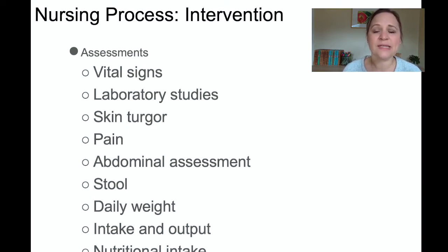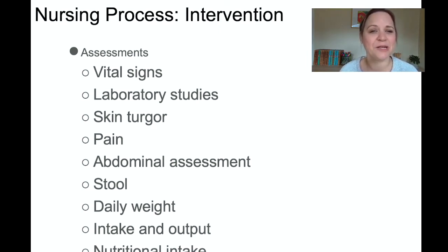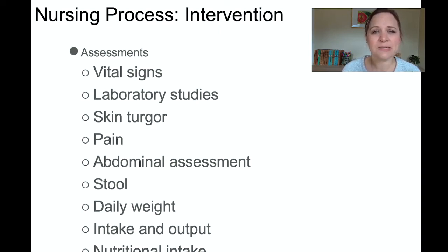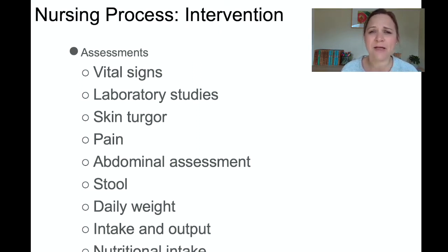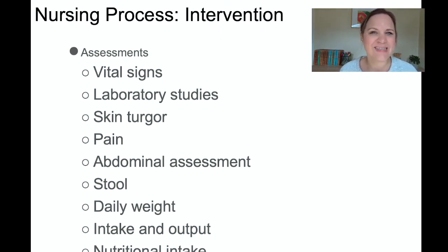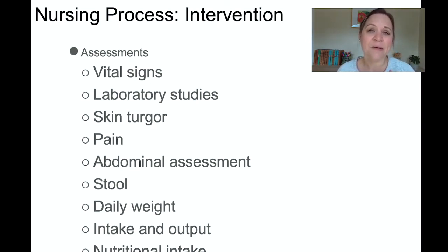With interventions, we think about what actions to take, what assessments to make, and what teaching to do. Assessments for cholecystitis include monitoring vital signs and lab studies — specifically hepatic function tests, liver tests, and pancreatic enzymes, which can all be elevated, as well as bilirubin. Because the liver, pancreas, and gallbladder are all interconnected in the right upper quadrant, when one organ is inflamed, we see spikes in those lab studies.